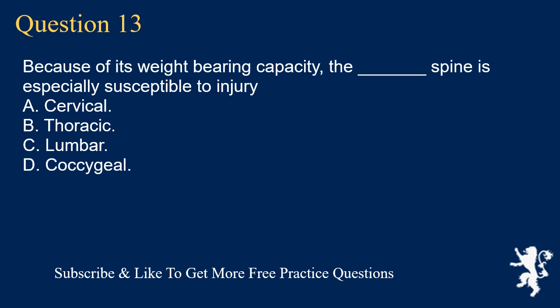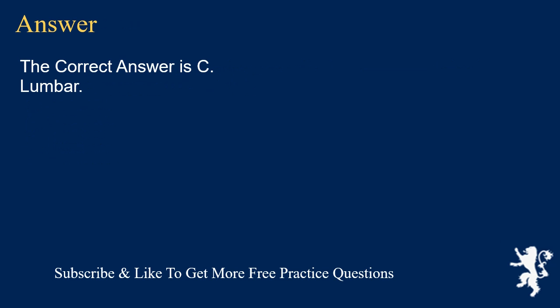Question 13. Because of its weight-bearing capacity, the underscore spine is especially susceptible to injury. A. Cervical. B. Thoracic. C. Lumbar. D. Coccygeal. The correct answer is C. Lumbar.